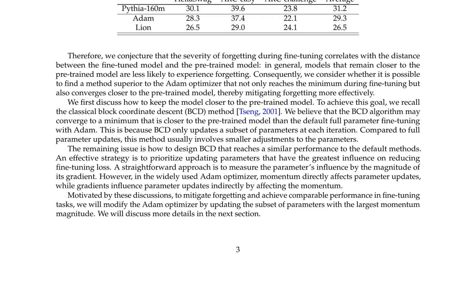The authors present loss landscapes of Pythia 160M after fine-tuning on a subset of the Flan dataset using Atom and Lion optimizers. They find that the two training methods converge to different minima with similar fine-tuning loss, with Lion converging to a minimum significantly farther from the pre-trained model and achieving a much larger pre-training loss. Atom achieves less forgetting than Lion on average, supporting the conjecture that the severity of forgetting during fine-tuning correlates with the distance between the fine-tuned model and the pre-trained model.